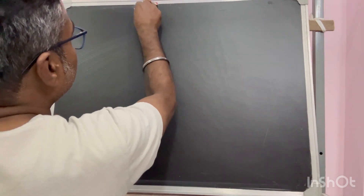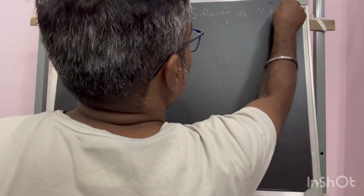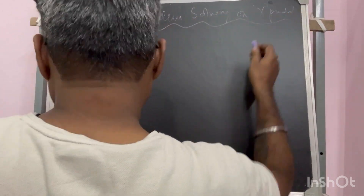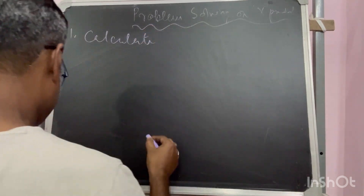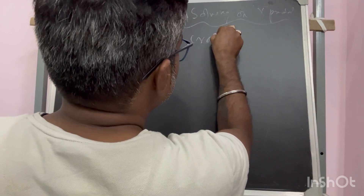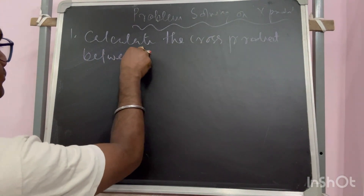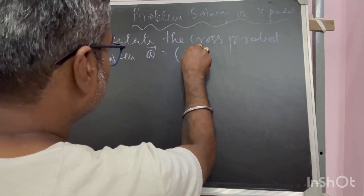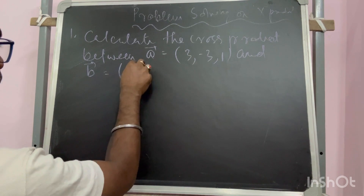Then I will take up another subject that will be a very short subject, and I will solve one or two problems on that. So let me start with the problem solving on cross product. Example one says: calculate the cross product between vector A given by (3, -3, 1) and B given by (4, 9, 2).